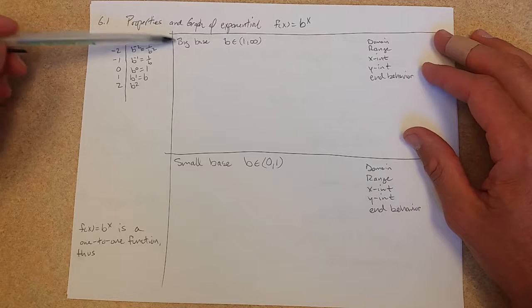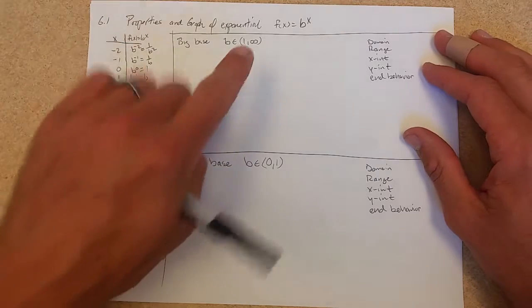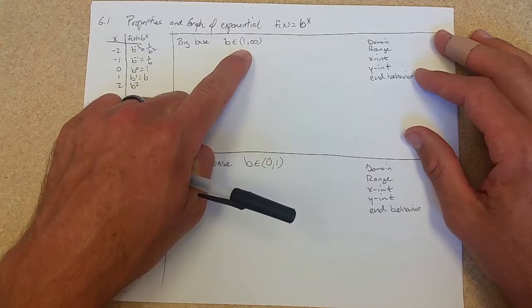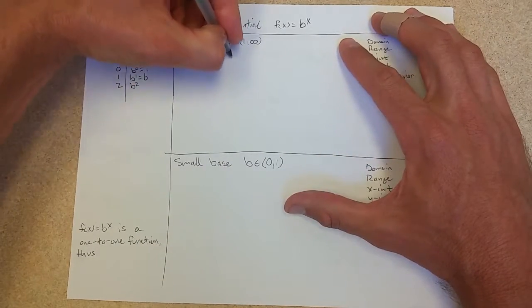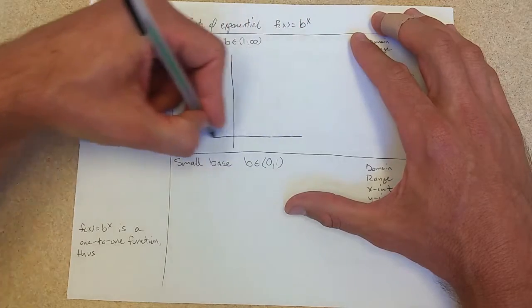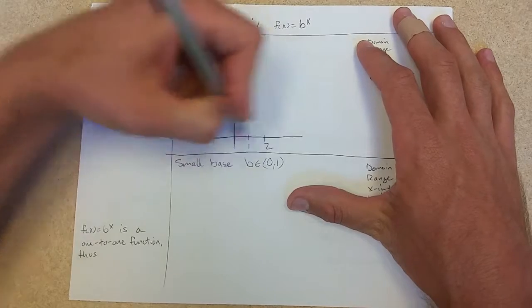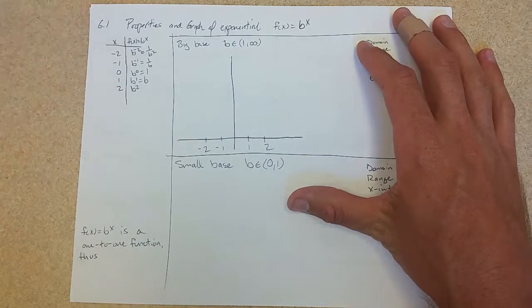So we're going to graph this out. Now how big is b? It could be anywhere, anything greater than 1. So I'm just going to draw it as if it was close to 2. And this will just let us get a pretty nice scale graph here. So we've got 1, 2, negative 1, negative 2. These are the x values I picked here.